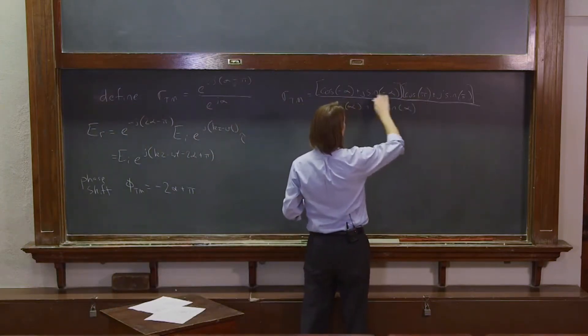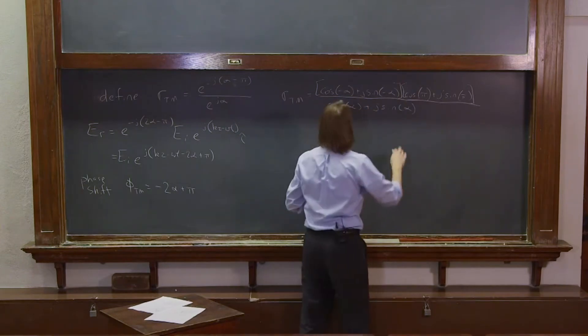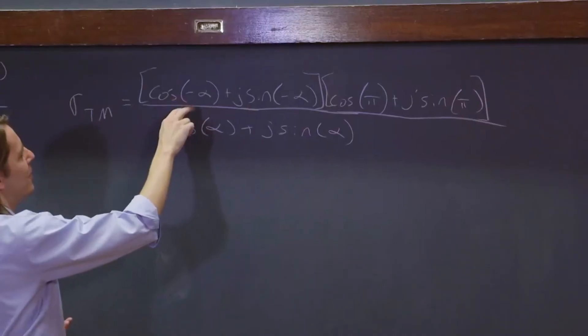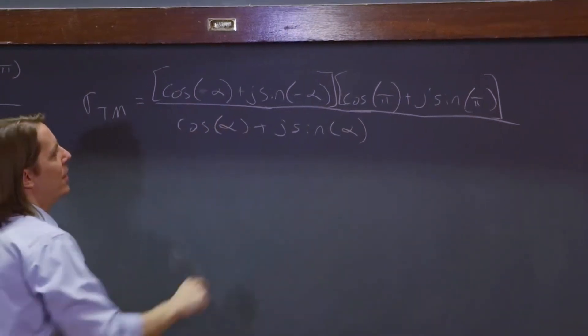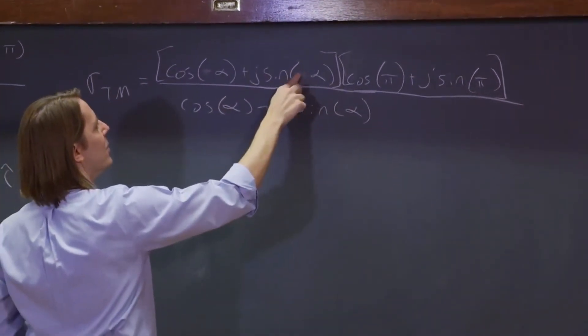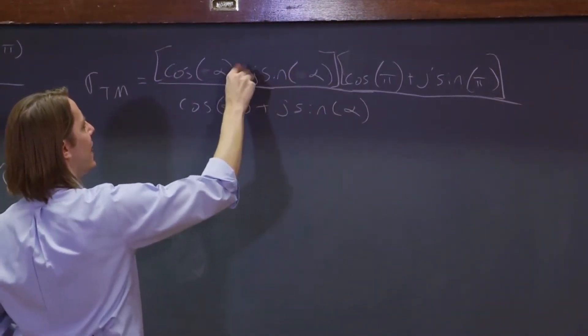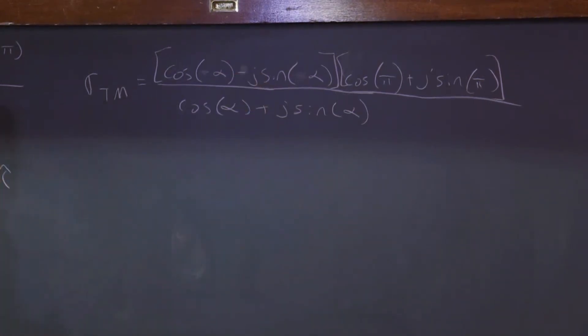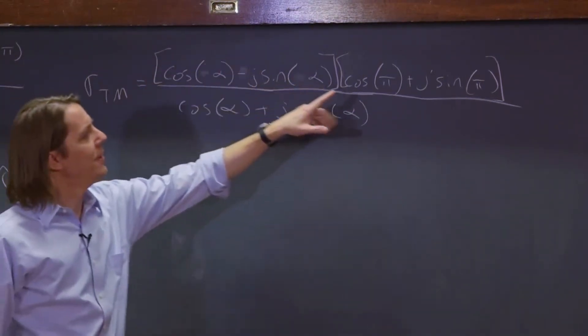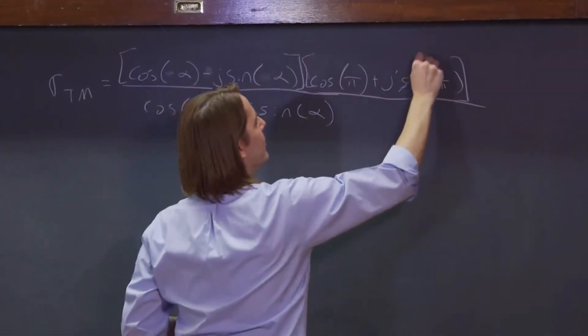All it does is give us a negative 1. OK, it's a way to flip the sine over here, because basically cosine of minus alpha is the same as cosine alpha. So that goes away. This minus comes out, so I'll make that a minus sign like that. I'll do that step by hand. And so now we have cosine alpha minus j sine alpha.